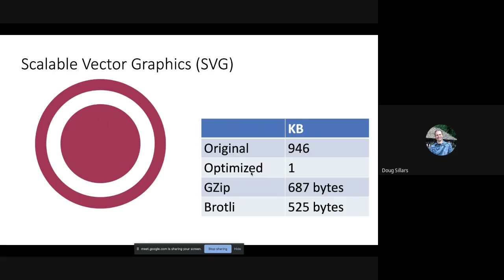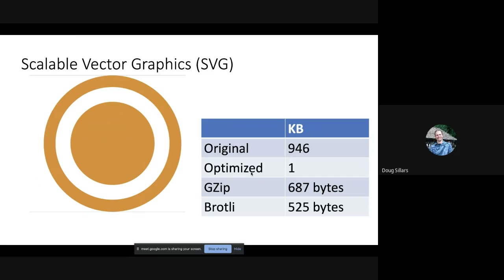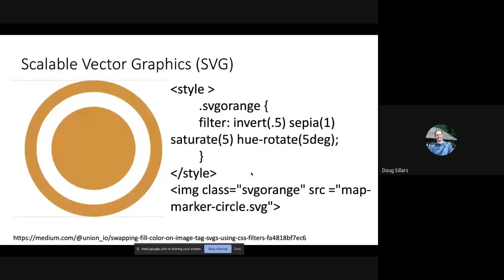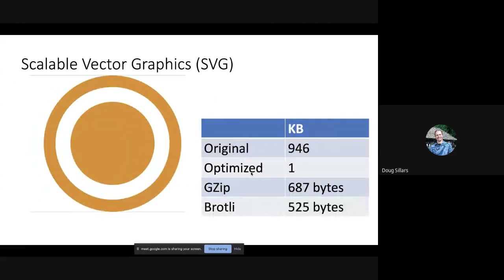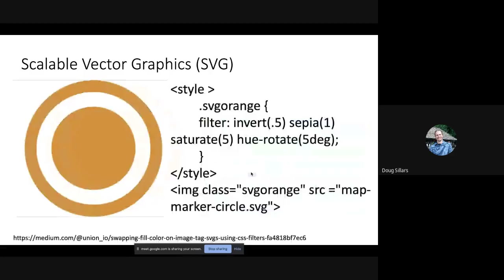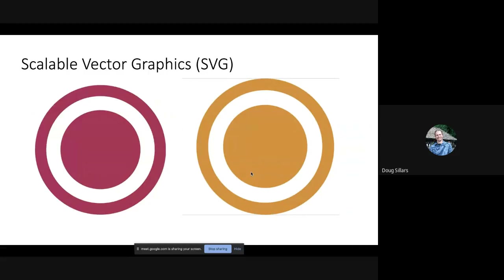Since an SVG is XML — a text file — you can gzip it, use Brotli, and get it down to about half a kilobyte. This site is completely missing that. They actually have two of these SVGs — a red and orange version. If you do web development and CSS, you know you can color an SVG with CSS, so you could have two lines of CSS, 600 bytes of a gzipped SVG, and you'd be good. Instead this page takes a 1.9-megabyte approach with two giant SVGs. You should catch this in testing — look at a web page and ask why these images are 900K.